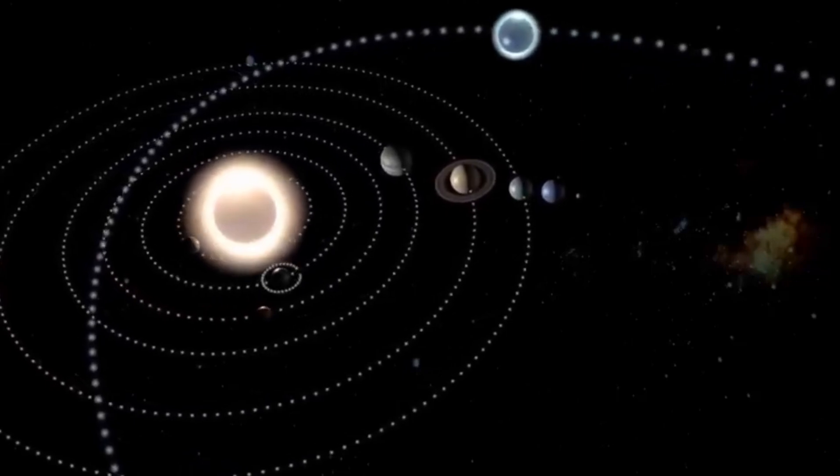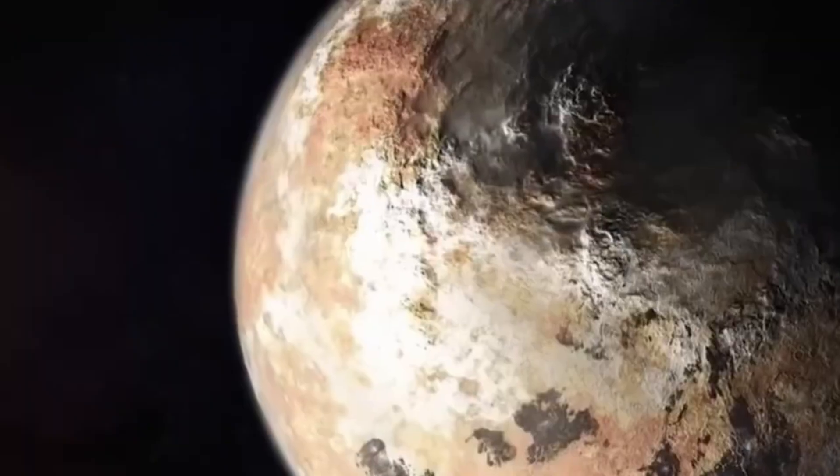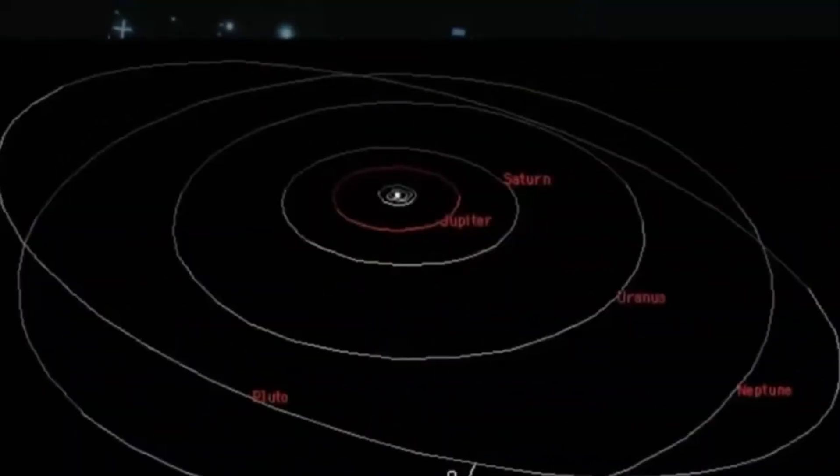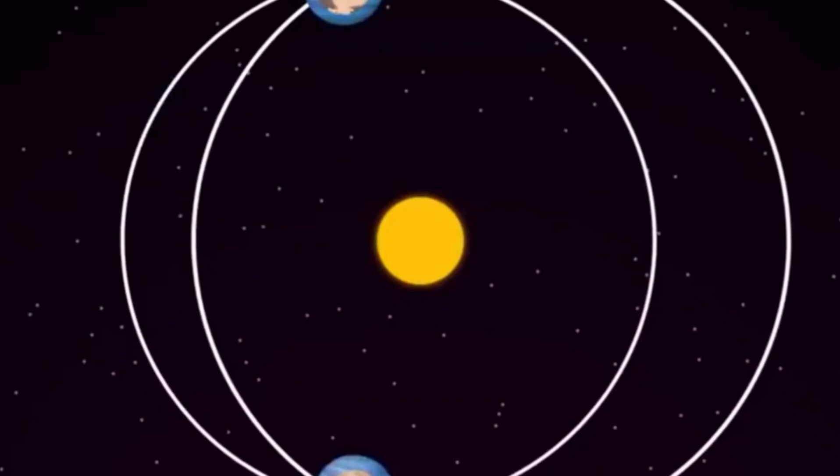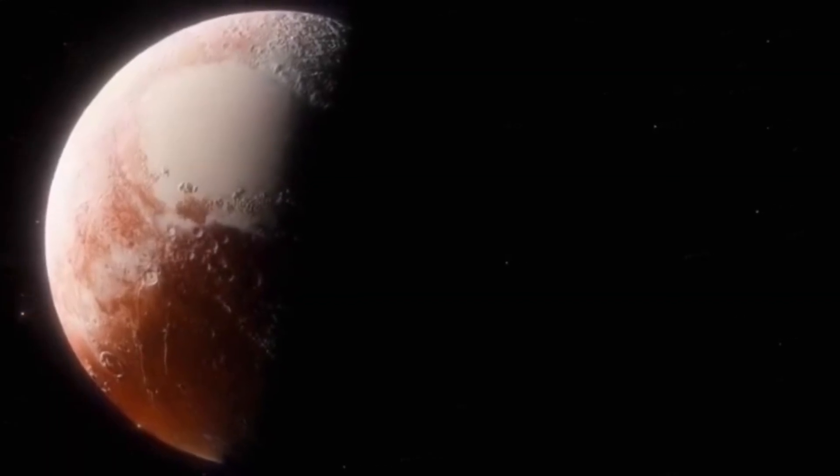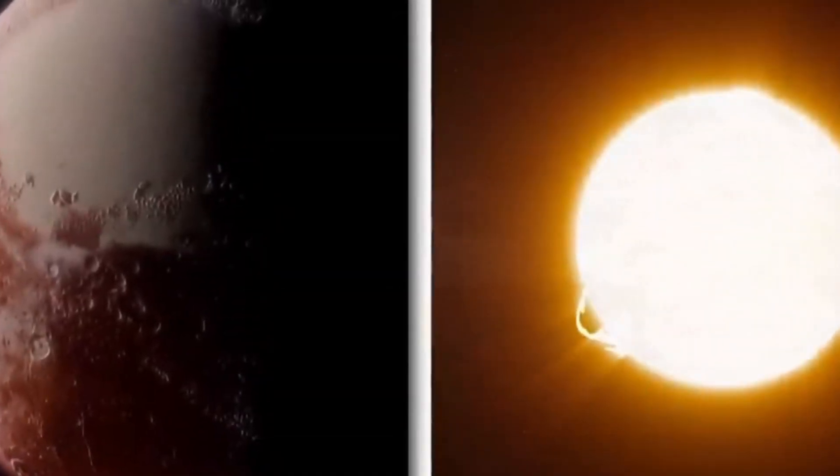Neil deGrasse Tyson and Michio Kaku, both prominent figures in astrophysics, have expressed concerns about a potential collision between Pluto and Neptune. If Pluto and Neptune were to collide, it would be a rare and catastrophic event in our solar system. The collision would release an immense amount of energy, likely shattering Pluto given its smaller size and icy composition. Debris from the collision could spread across the solar system, potentially creating hazards for other planets and their moons. For Neptune, such an impact could alter its atmosphere and potentially its orbit.